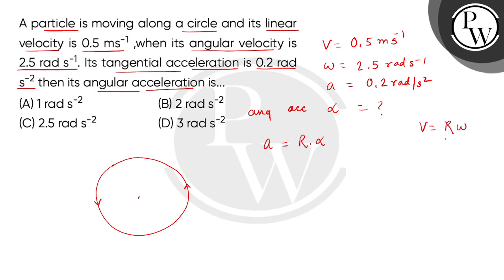So R equals V divided by omega. Using A equals R alpha, we get A equals V alpha divided by omega. Therefore, alpha equals A omega divided by V.